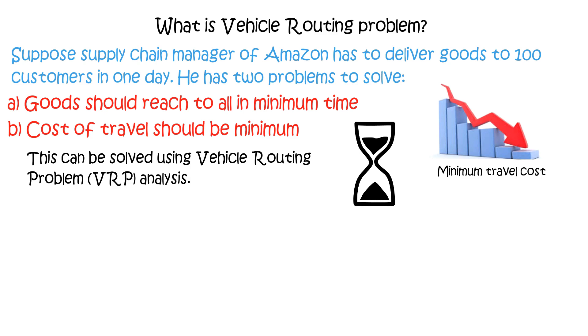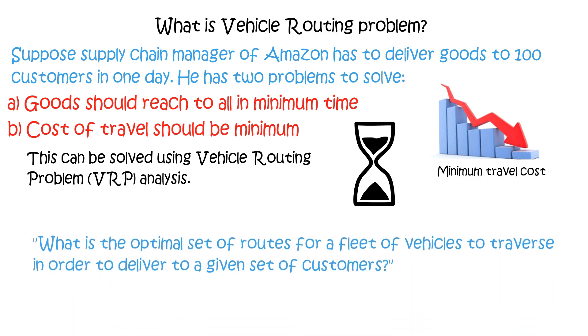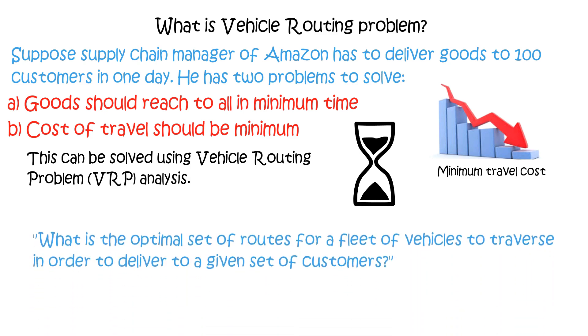VRP is a combinatorial optimization problem which asks: what is the optimal set of routes for a fleet of vehicles to traverse in order to deliver to a given set of customers?